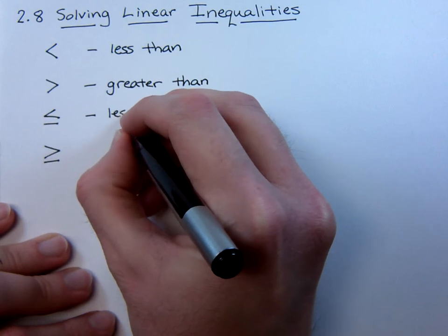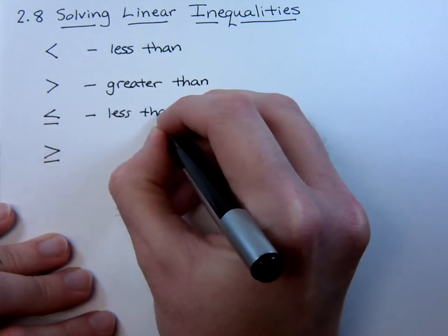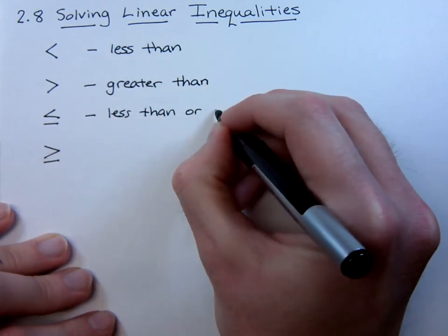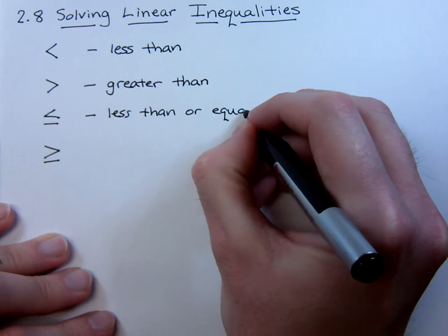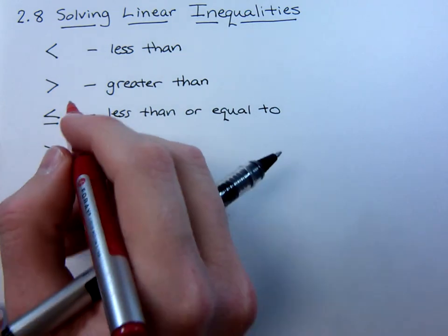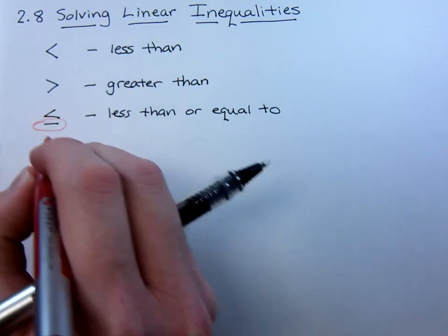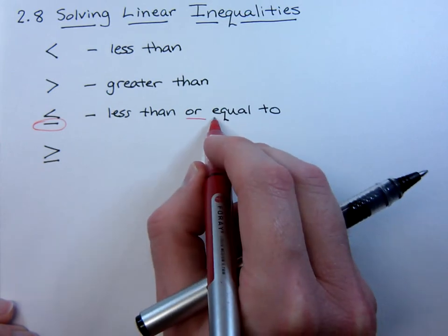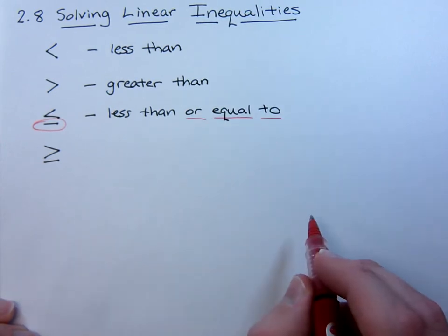This next one is less than or equal to. What you're going to notice here is that it has this extra little mark on it right here, and it's this piece right here that gives us the or equal to part.